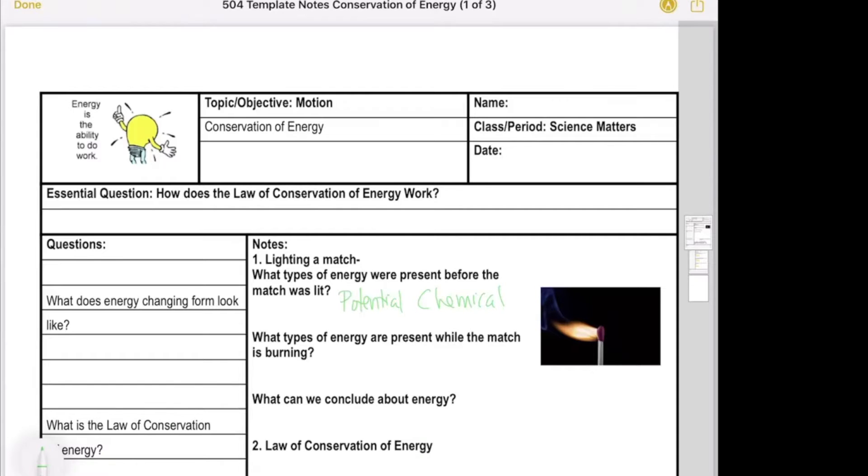While it's burning, there's heat energy given off and light energy, electromagnetic. Those are the two big ones, but keep in mind, energy never really disappears. It changes form.